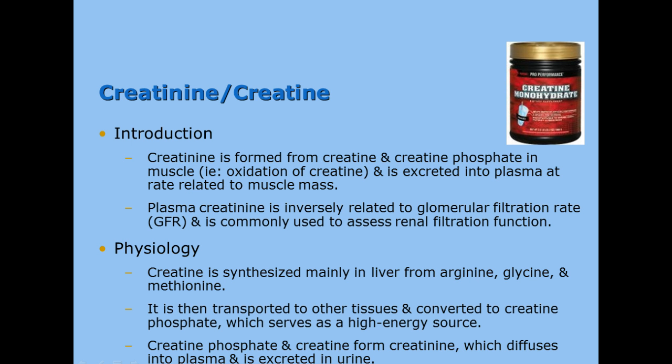Creatine is synthesized in the liver from a couple of amino acids, then transported to other tissues and converted to creatine phosphate, which serves as a high-energy source for muscles. As you can see on the slide, there is one of those big jugs of creatine you might see in a GNC store window. Creatine phosphate and creatine form creatinine, which diffuses into the plasma and is excreted in the urine.